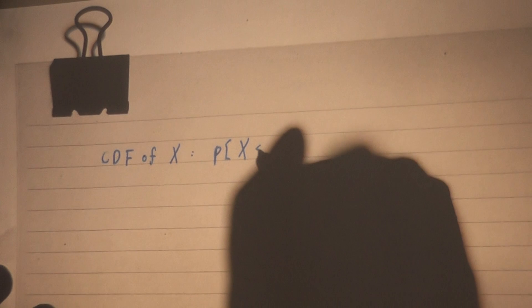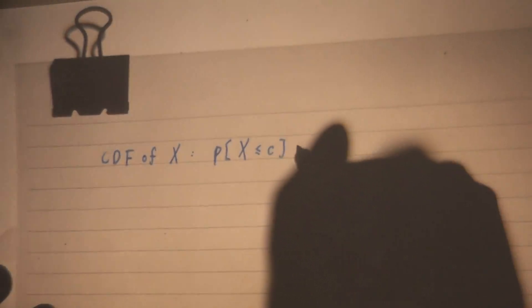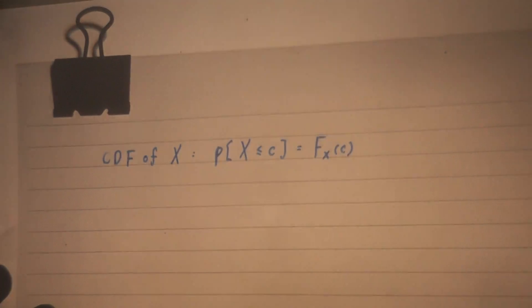Let's review the last talk about the CDF. CDF of x — you need to remember this. Probability that x is less than or equal to c, denoted by F sub x evaluated at c.